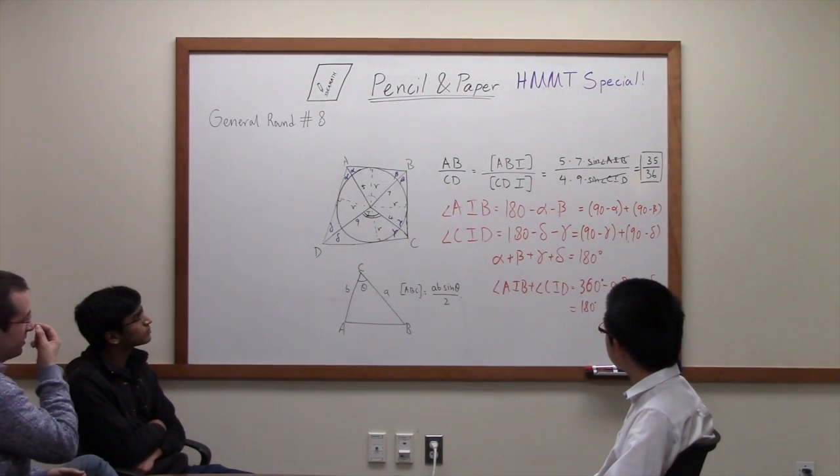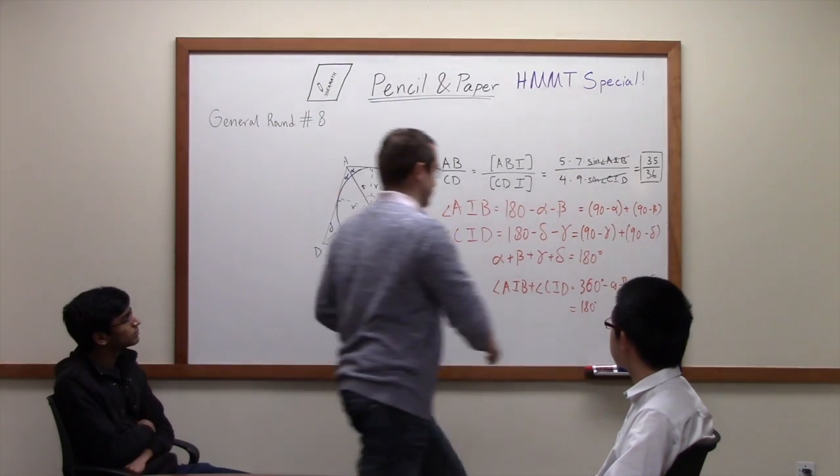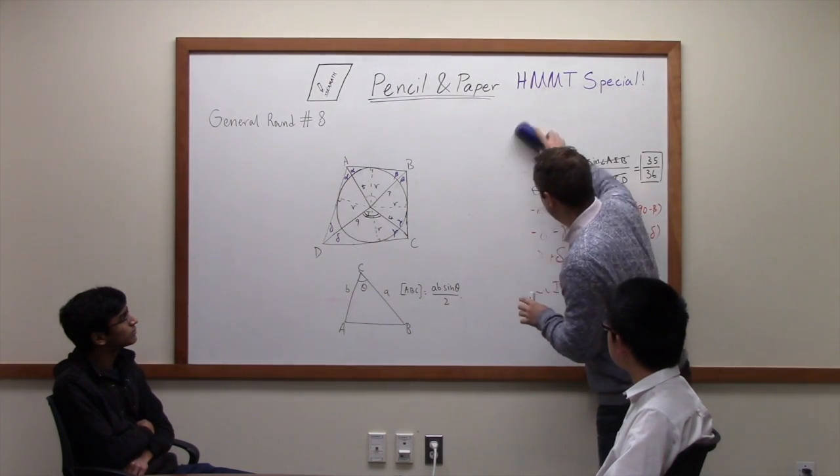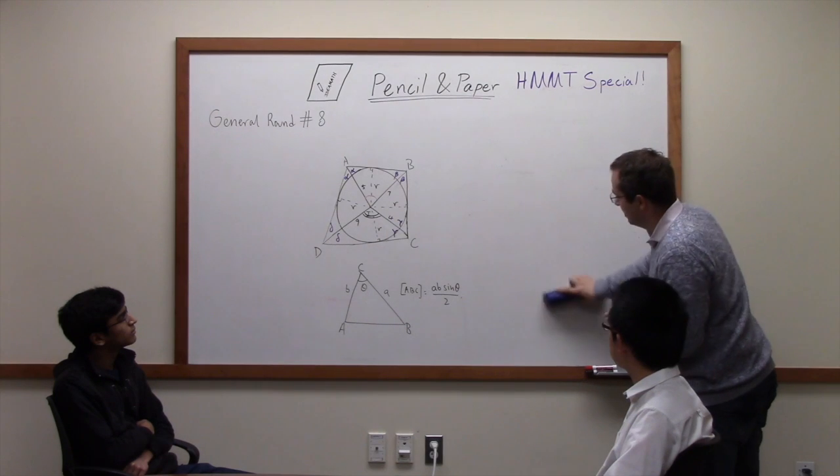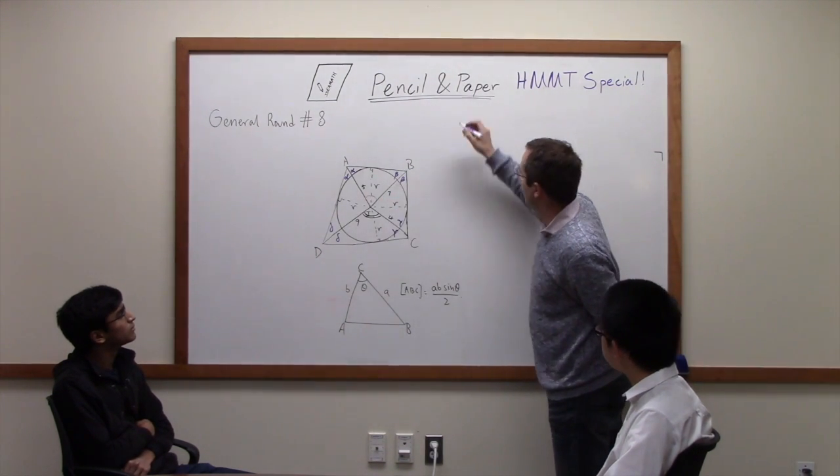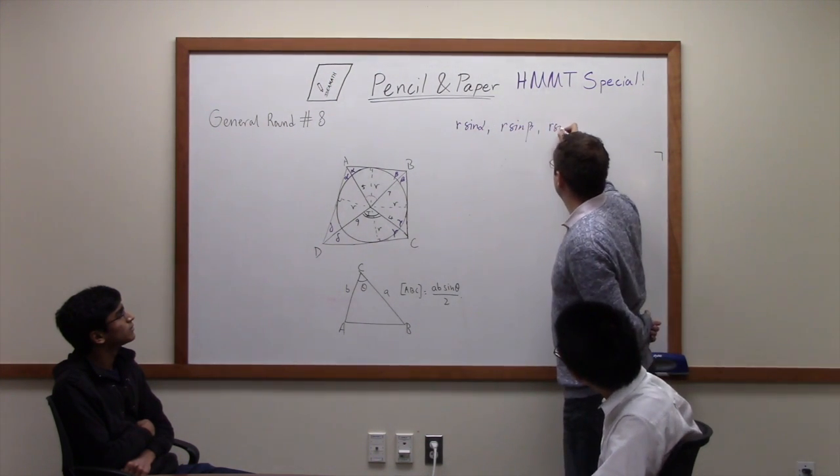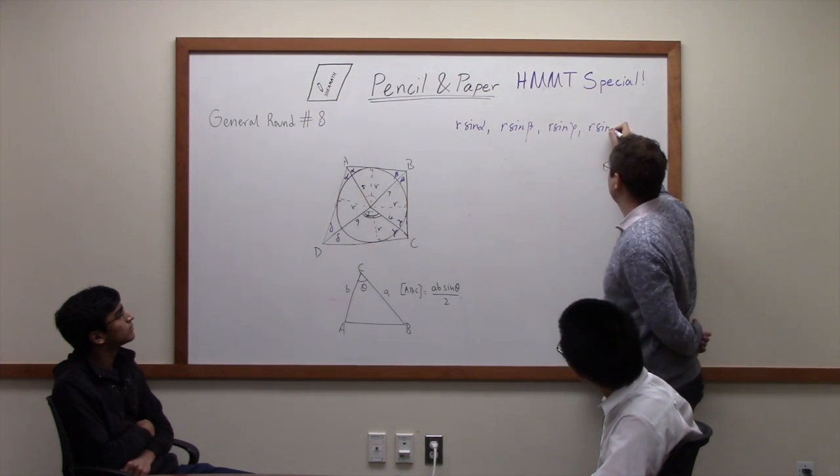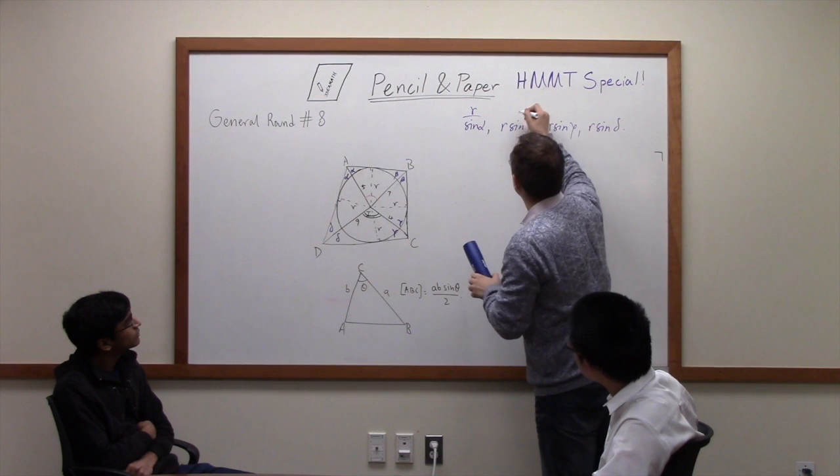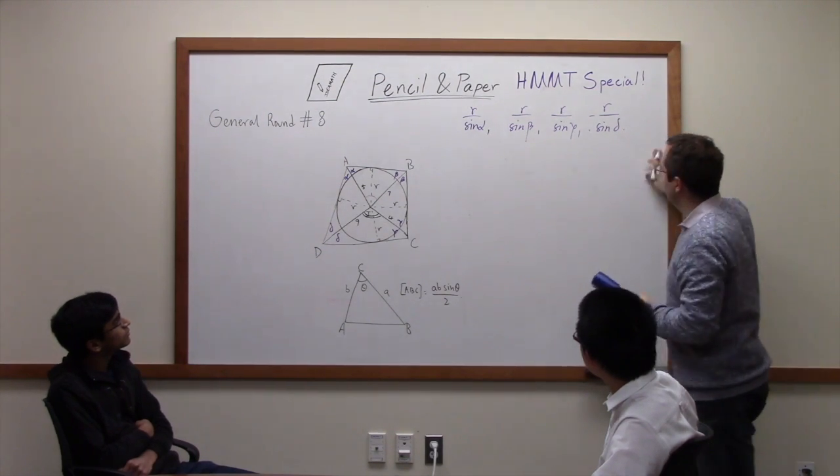Usually when I solve these problems, the first approach I take is maybe simple brute force. So I can show how one can think about a solution that is not creative at all. First of all, this picture, as you said, it all depends on these four angles and the R. So initially what we're given, we're given AI, so we're given R sine alpha, R sine beta, R sine gamma, and R sine delta.